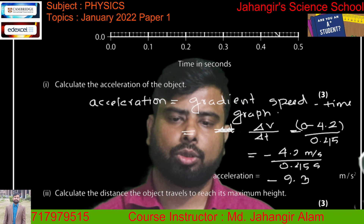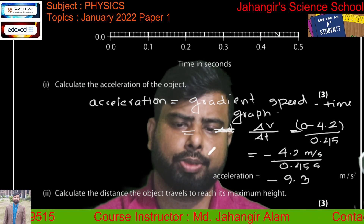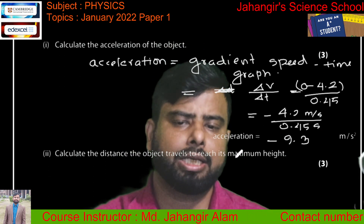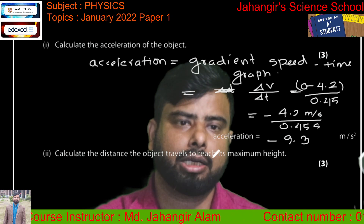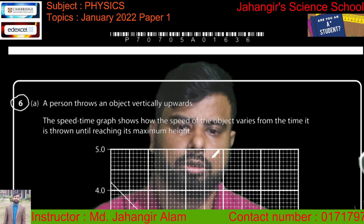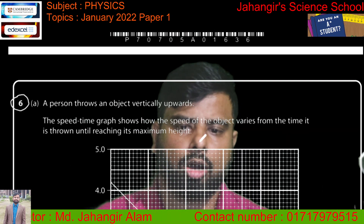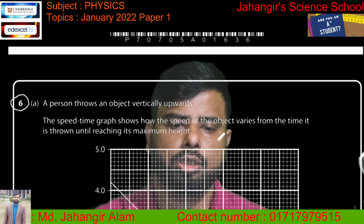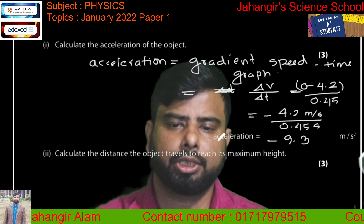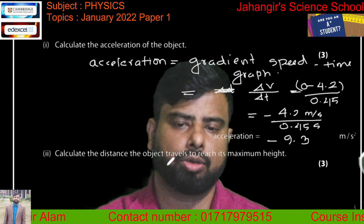The unit of acceleration is meters per second squared. The minus sign indicates that the object is decelerating — that means it is slowing down.